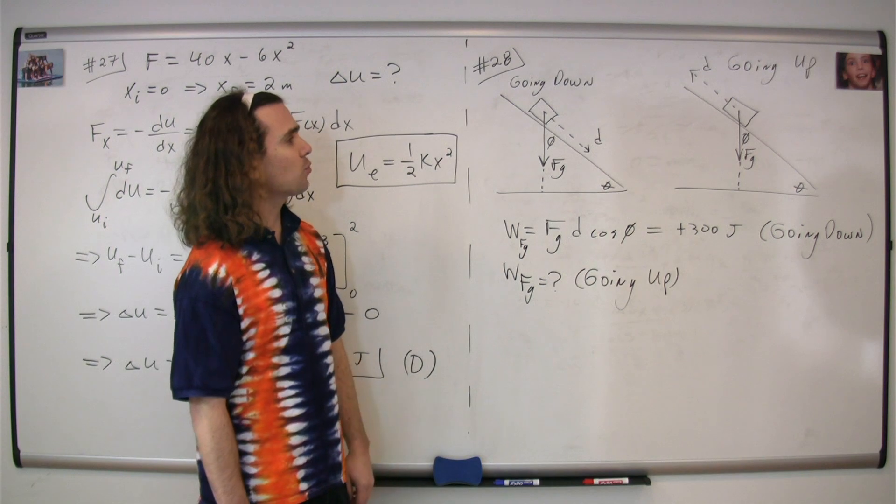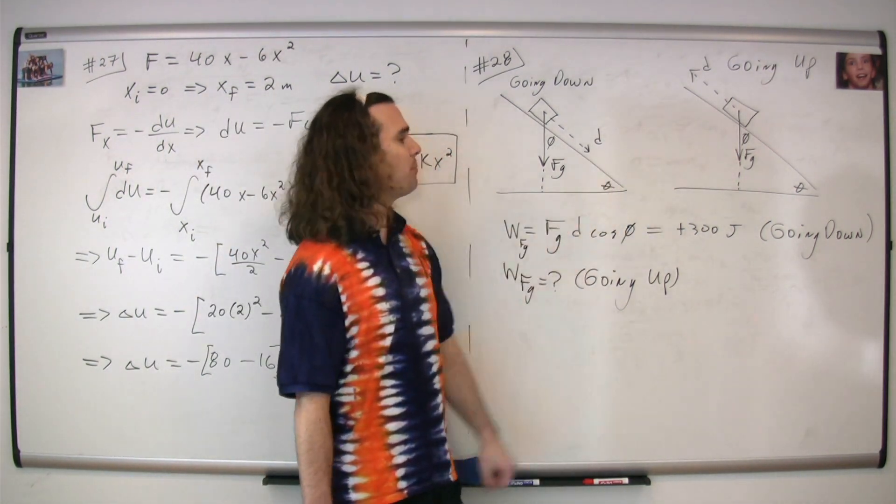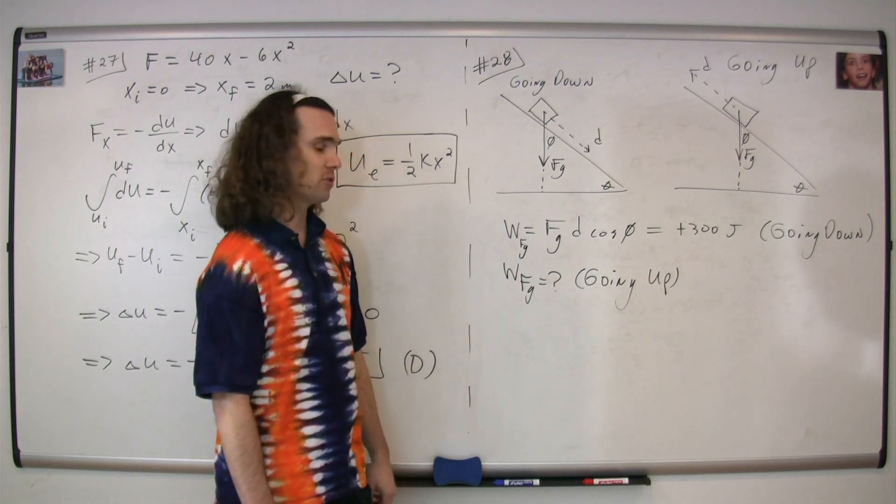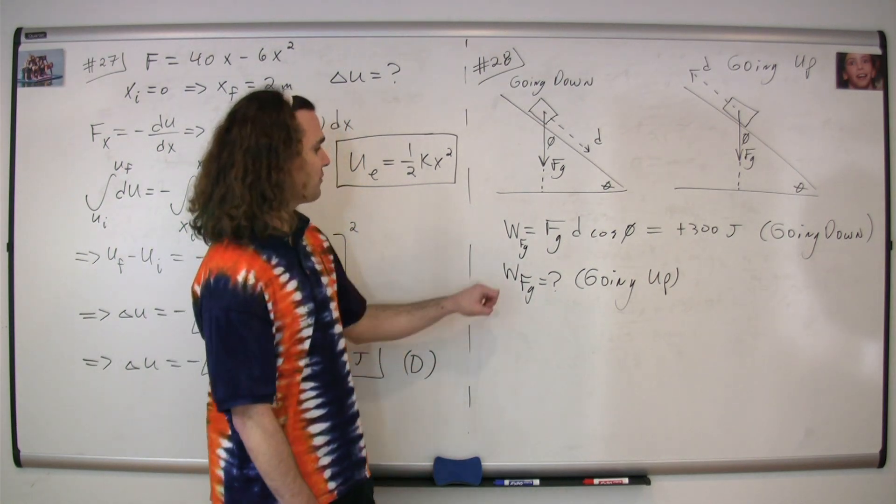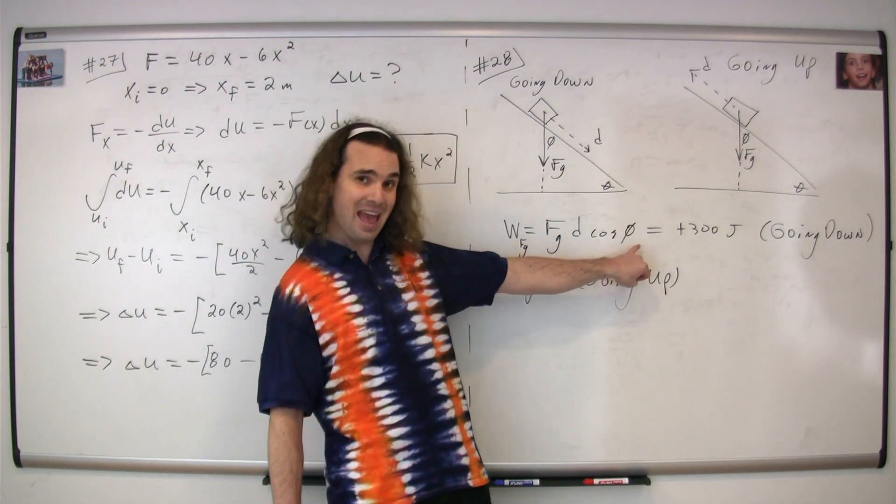And they've asked us, what is the work done by the force of gravity when the block goes the same distance d up the incline? We need to start with the equation for the work done by the force of gravity, which is going to be the force of gravity times the displacement times the cosine of the angle.